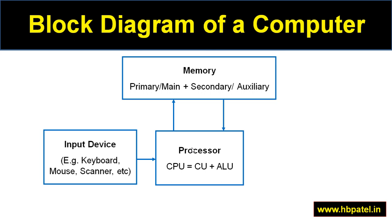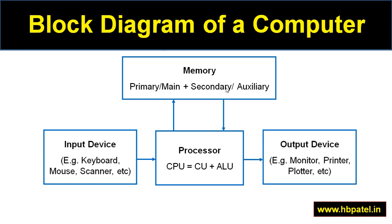The processor has one limitation — it does not have enough memory to hold data. For example, if I want to add a hundred numbers, the processor doesn't have enough memory to hold all that data, so it needs a separate memory module. Memory is divided into two basic parts: primary memory (also called main memory or volatile memory) and secondary memory (also called auxiliary memory or permanent memory). We normally use RAM for primary memory, where data is stored temporarily while running a program. Secondary memory stores data permanently — for example, when we save a file it goes to the hard disk.